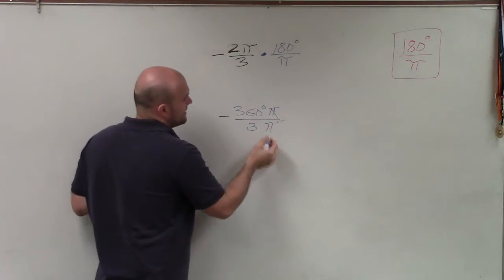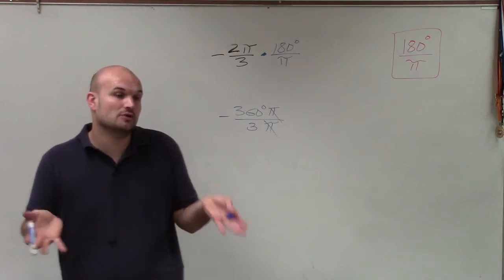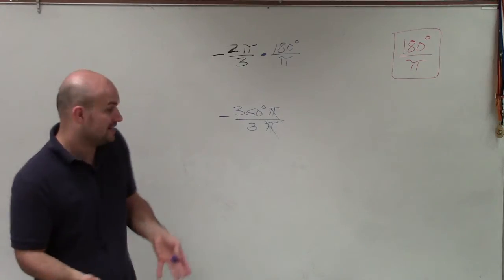Well, here you can see that my π's divide out. So therefore, I no longer have an angle that's in radian form.